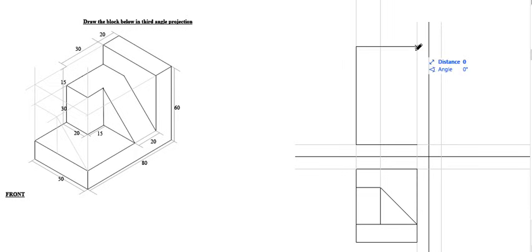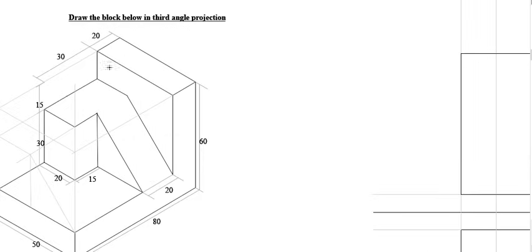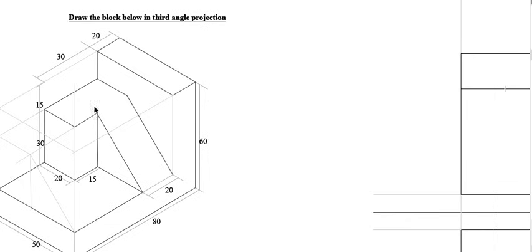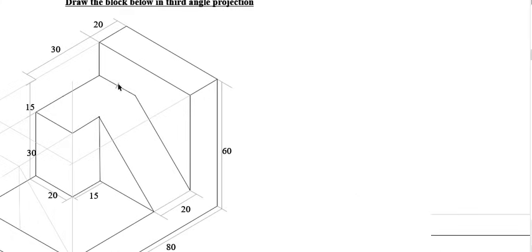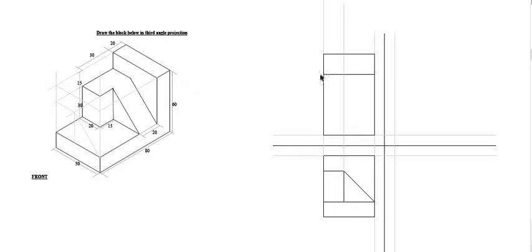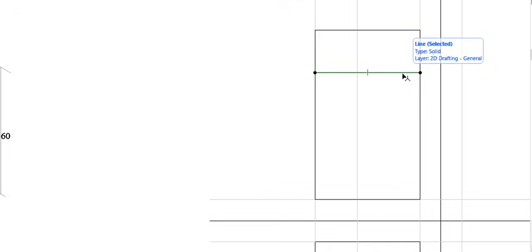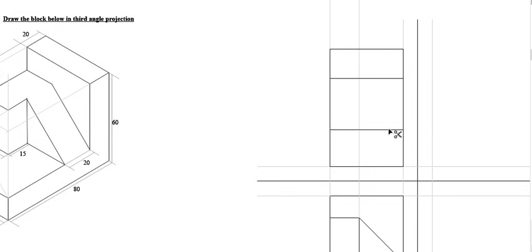Just draw it like that. Then coming to the top, we have this section here — it is on the top, so we are also going to represent it on the top. It is 20 millimeters, so draw this line 20 millimeters. Measure 20 millimeters from here going downwards, then draw a line. Then we have this distance — you measure from this point to this point. You just take 20 plus 15 to give you 35, and draw another line at 35 going downwards. But this part won't be there.